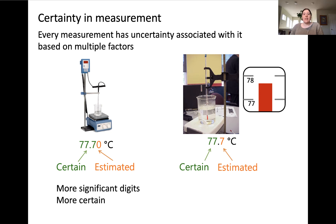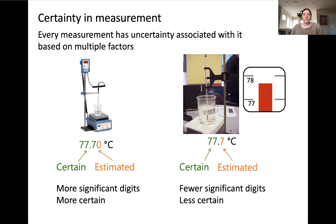In the case of these two instruments, the thermometer probe contains more significant digits and is thus more certain, while the alcohol thermometer contains fewer significant digits and is thus less certain.